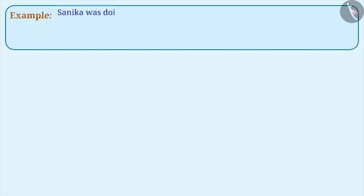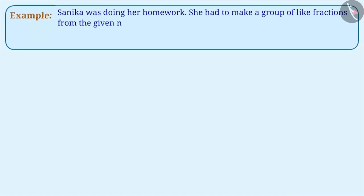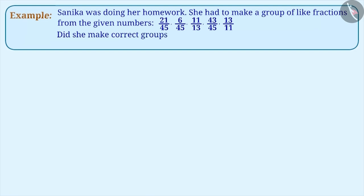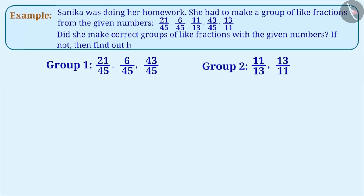Next example. Sanika was doing her homework. She had to make a group of like fractions from the given numbers: twenty-one by forty-five, six by forty-five, eleven by thirteen, forty-three by forty-five, and thirteen by eleven. So she made the following group of numbers. Did she make correct groups of like fractions from the given numbers? If not, find out what mistake she made.